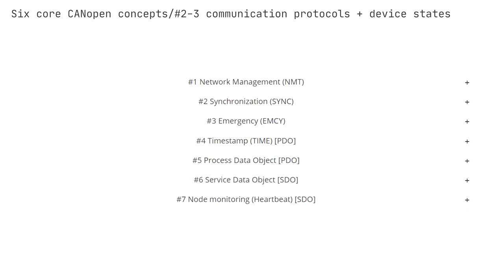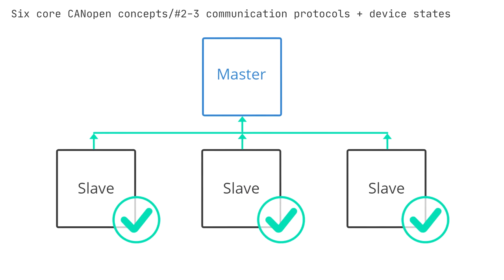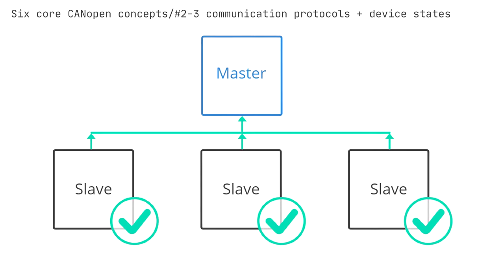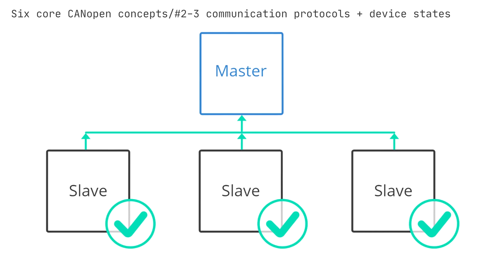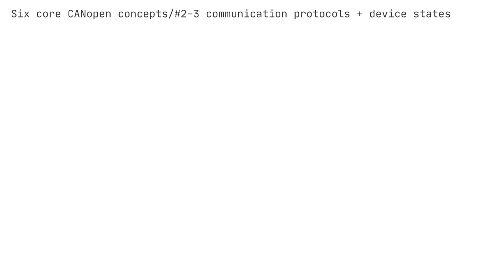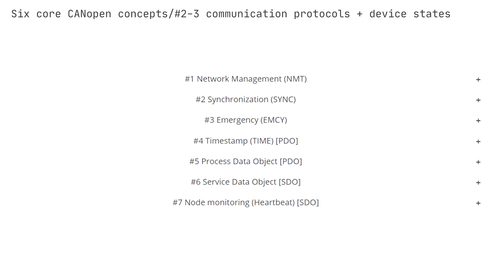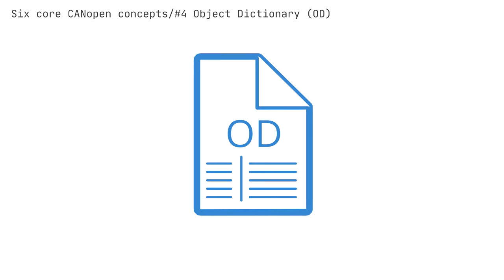Number 7: Node Monitoring (Heartbeat SDO) — the heartbeat service has two purposes: to provide an ALIVE message and to confirm the NMT command. Amongst the seven CANopen services, the PDO and SDO services are particularly important as they form the basics of most CANopen communication. We deep-dive on both, but first we need to introduce a core concept of CANopen — the object dictionary.